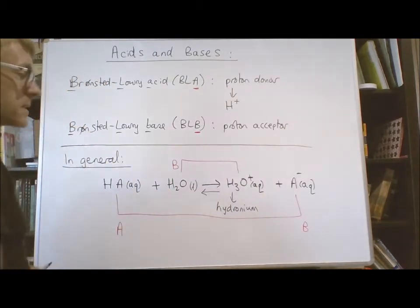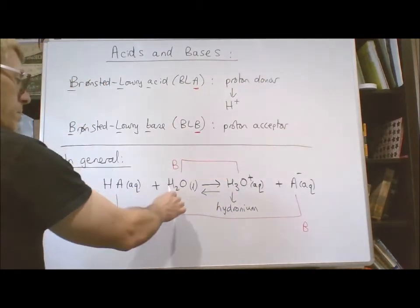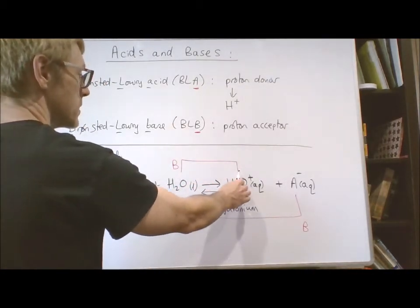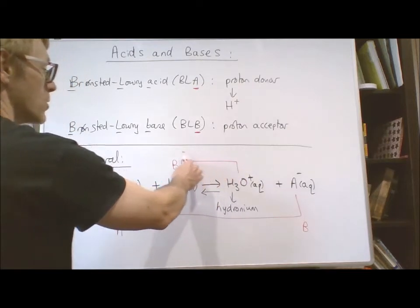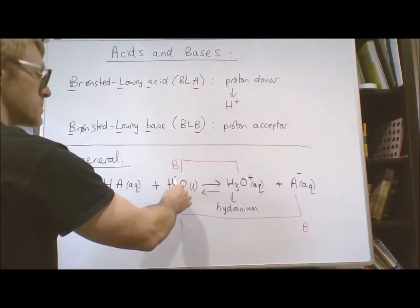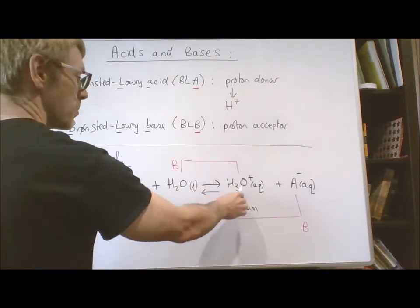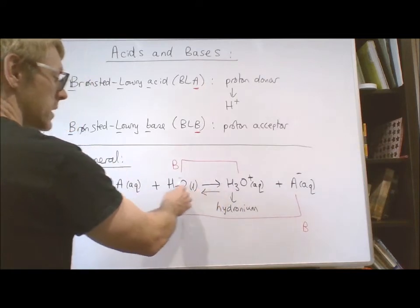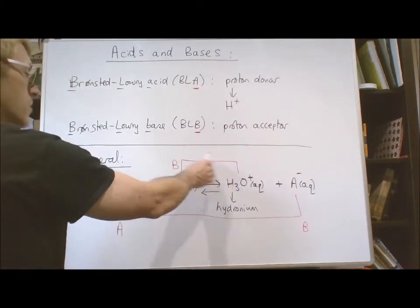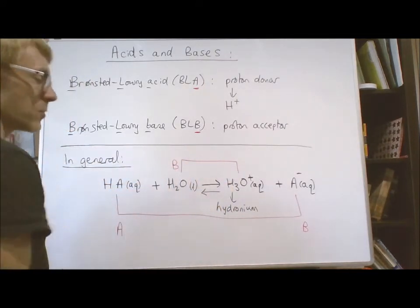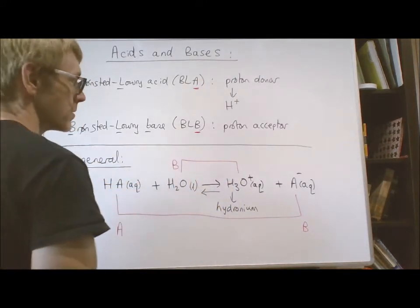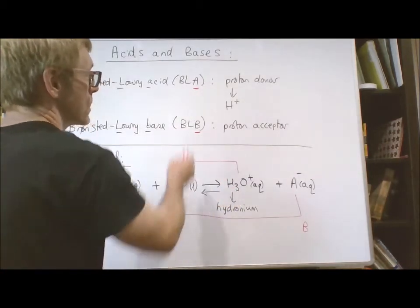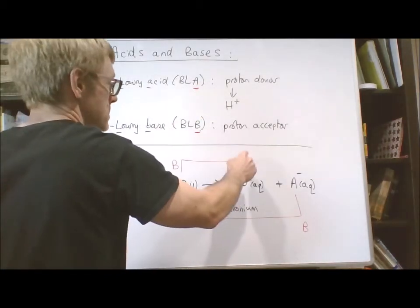Looking at the hydronium ion in reverse: it had three protons but now only has two, so to go back it must have donated a proton. Hydronium is therefore behaving as a proton donor — so hydronium is an acid.